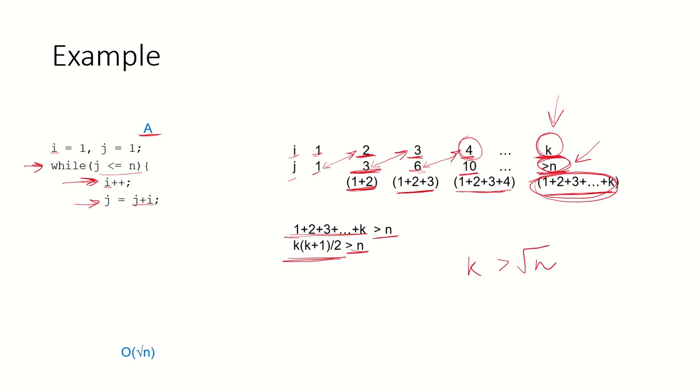So that means this loop is going to run for root n times. We say the time complexity of this algorithm is root of n.